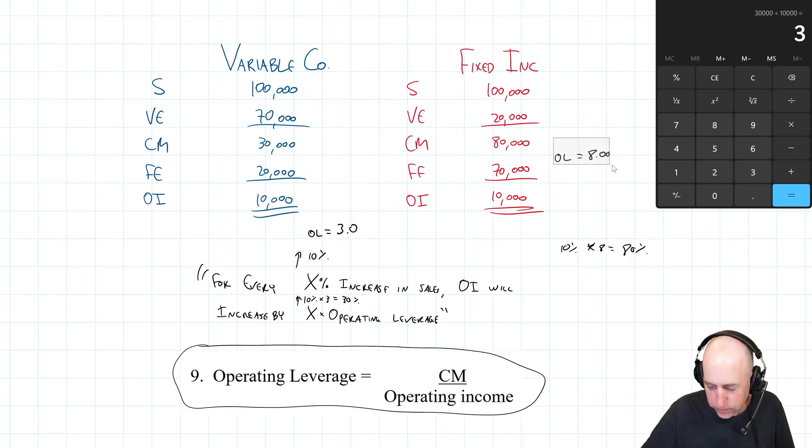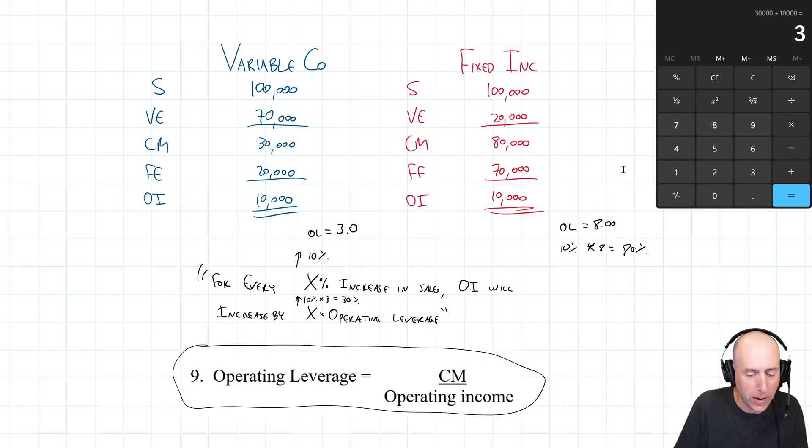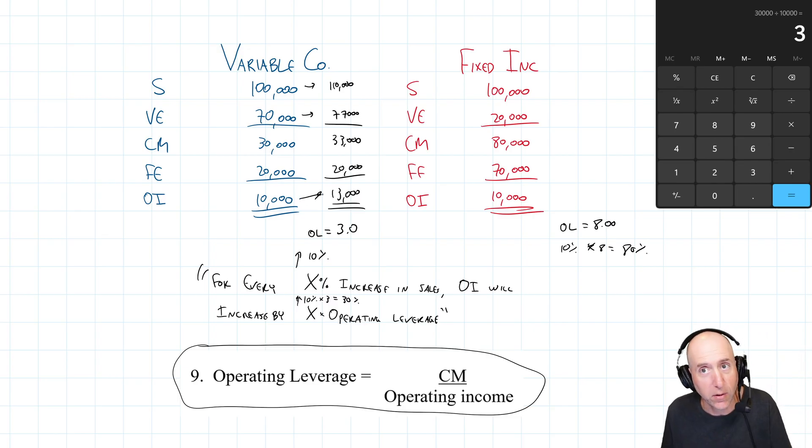This is a way of discussing that relationship. So let me just prove what I just said. So let's just say both companies sales do go up by 10%. So this goes up by 10%. So it becomes $110,000. This is plus 10% because variable costs go up if sales go up. So this is $77,000. $110,000 minus $77,000 is $33,000. Fixed expenses remain the same. So fixed expenses are $20,000. And our operating income goes up to $13,000. Well, wouldn't you know it? That's a 30% increase.